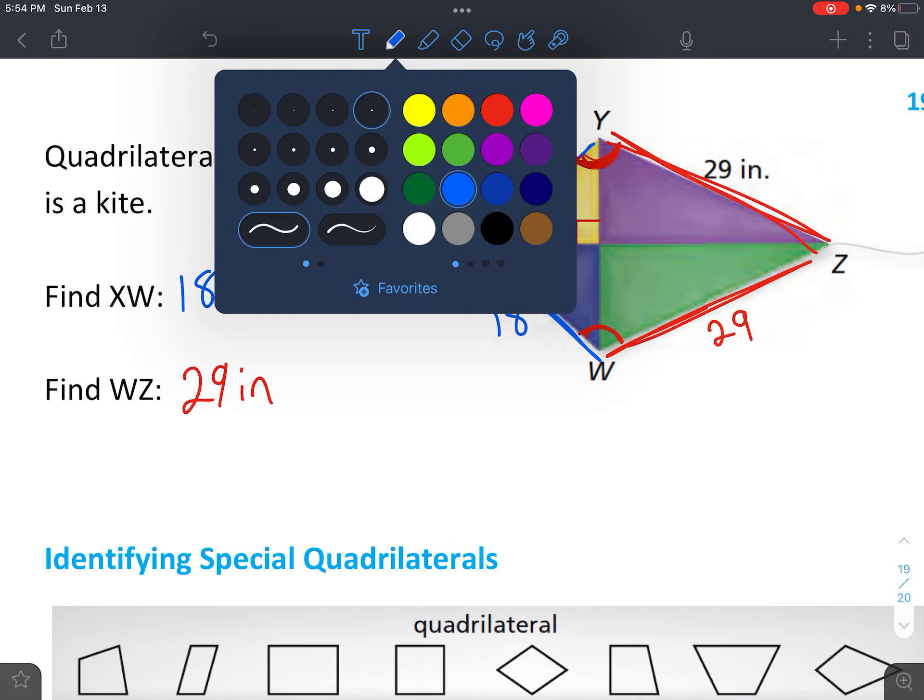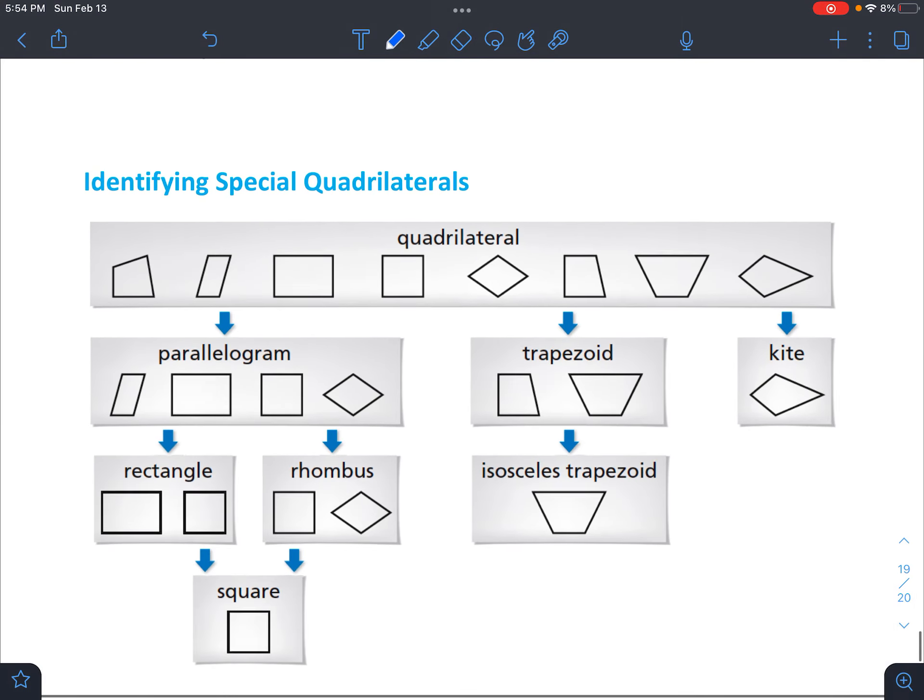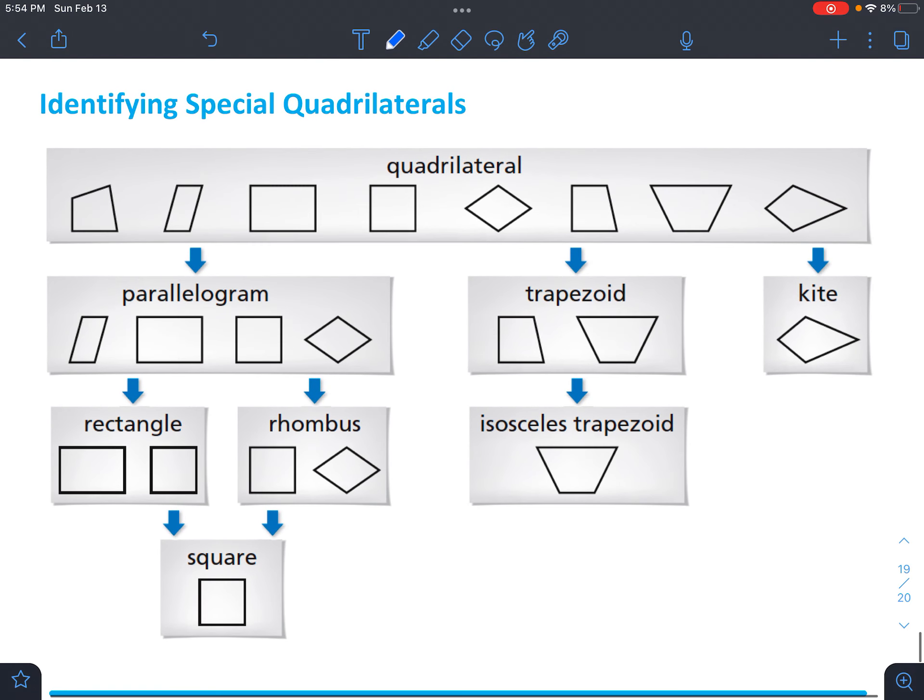All right, we're almost finished. Let's look at this last little part here. So it's just a quick overview. We've talked a little bit before about special quadrilaterals. So quadrilateral just has four sides, right? And then it kind of goes down to some classifications. So there are parallelograms or trapezoids or kites.